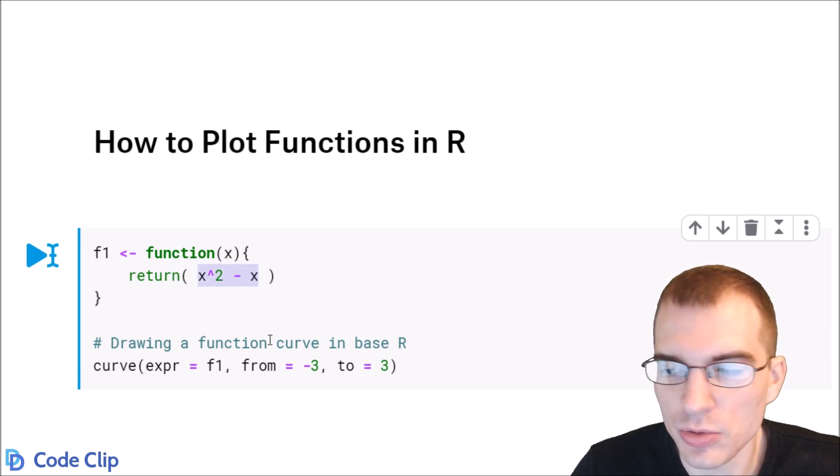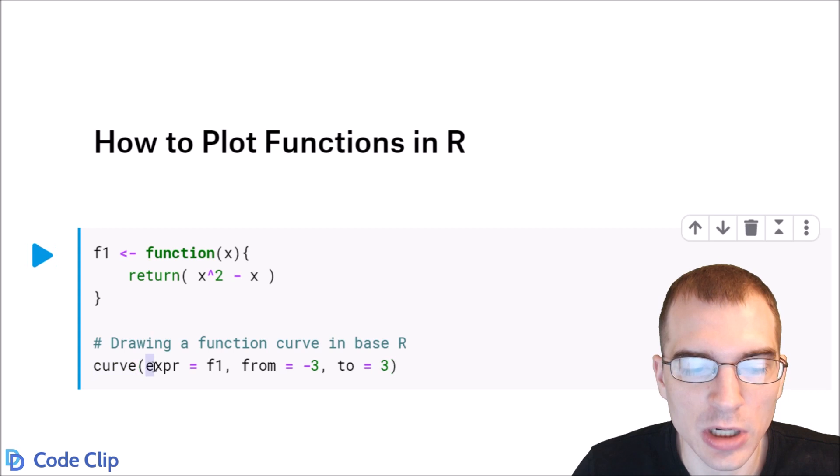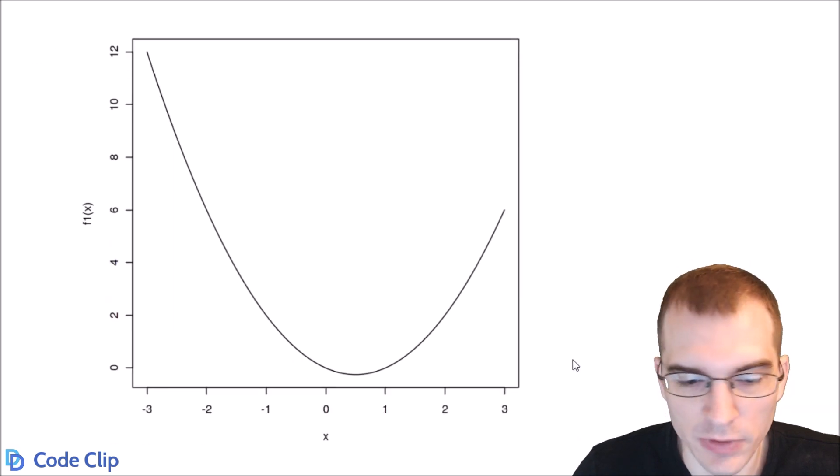And then to draw the function using base R we can use this curve function. So we set the first argument, the expression, to the function definition F1, and then we just specify what interval we want to plot it on. So we're going to plot it from negative 3 to 3. When we run this it will create a plot of this function on the interval that we specified here.